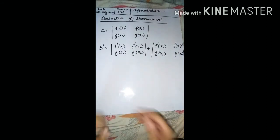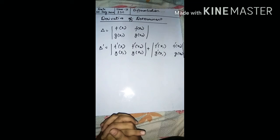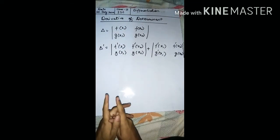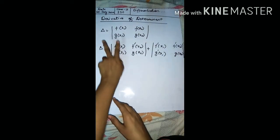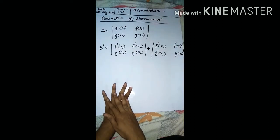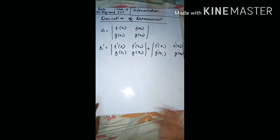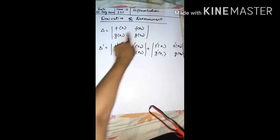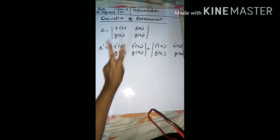In the last video we have seen about the derivative of parametric forms. Today our topic is derivatives of determinants. Let me give you some glimpses of how you can derive a determinant — there are only four examples in the book, and they are very easy ones. So if you have delta equal to f(x1), f(x2), g(x1), g(x2), this is a second order determinant.